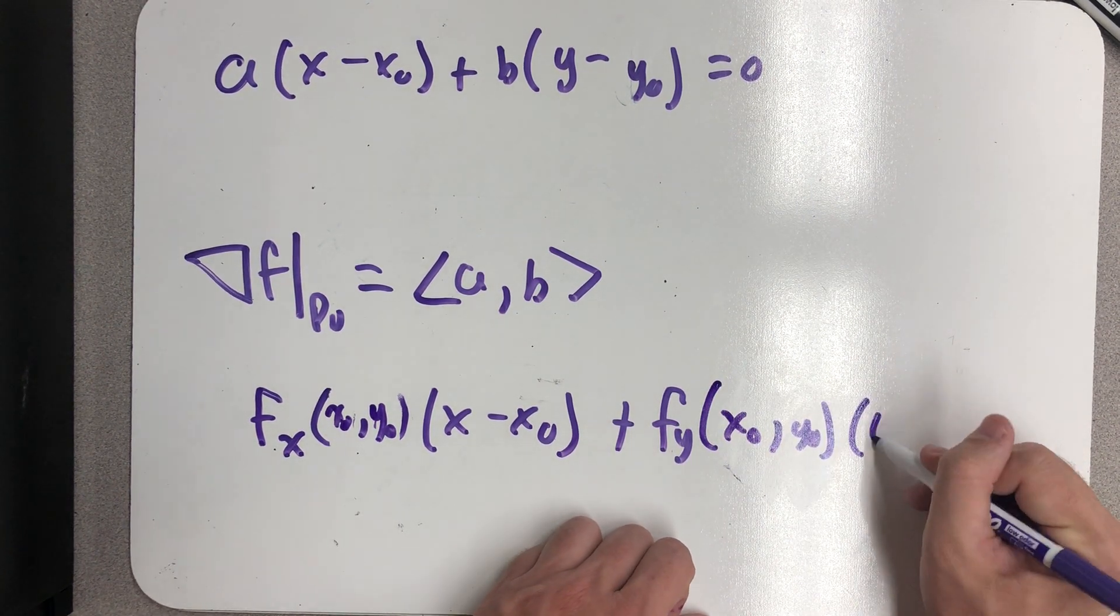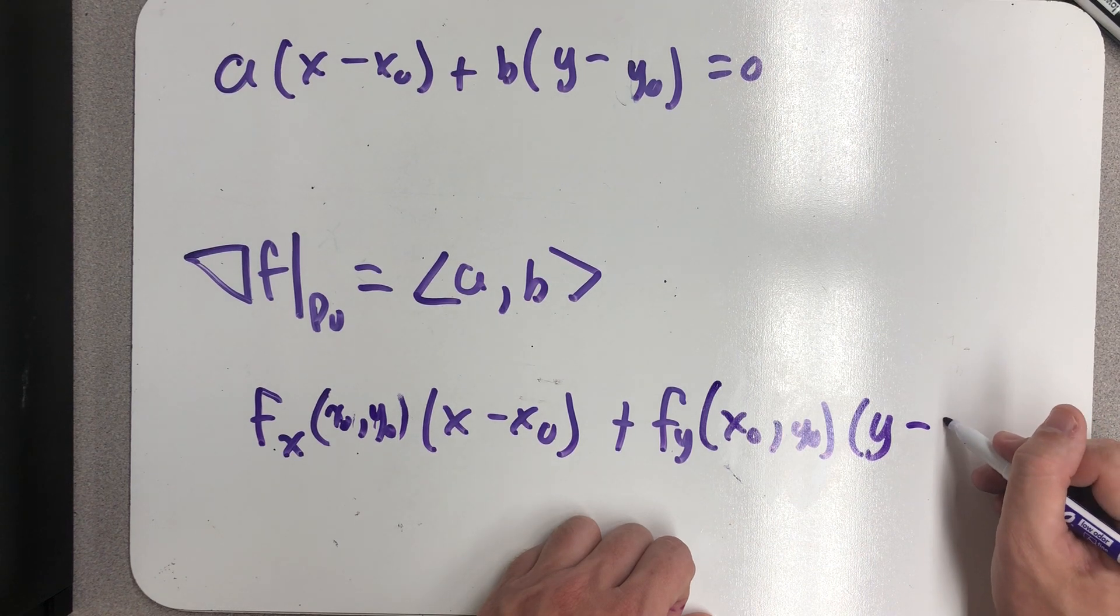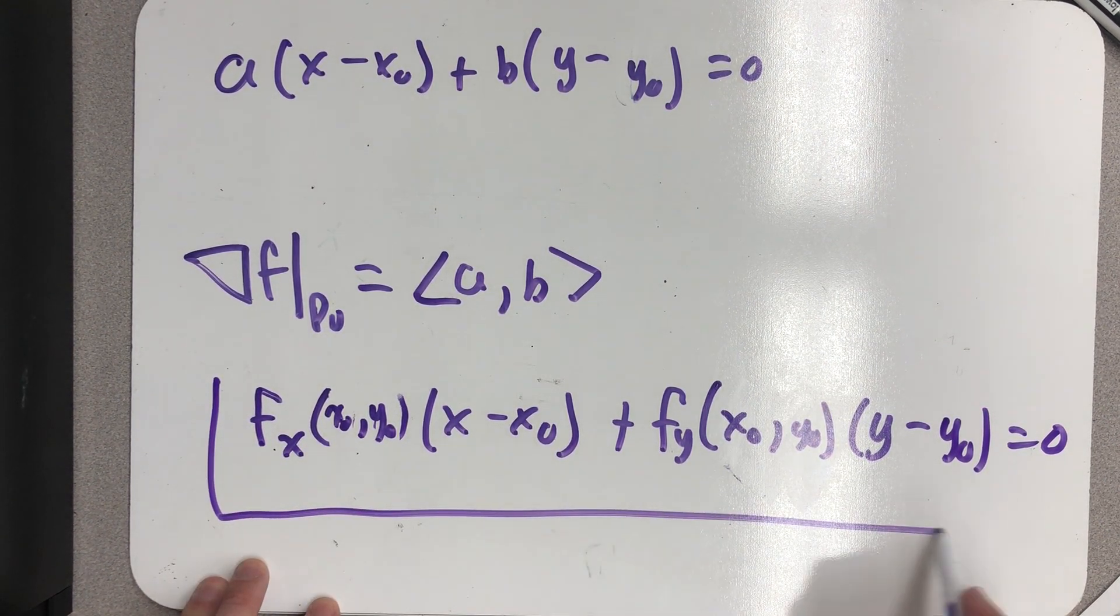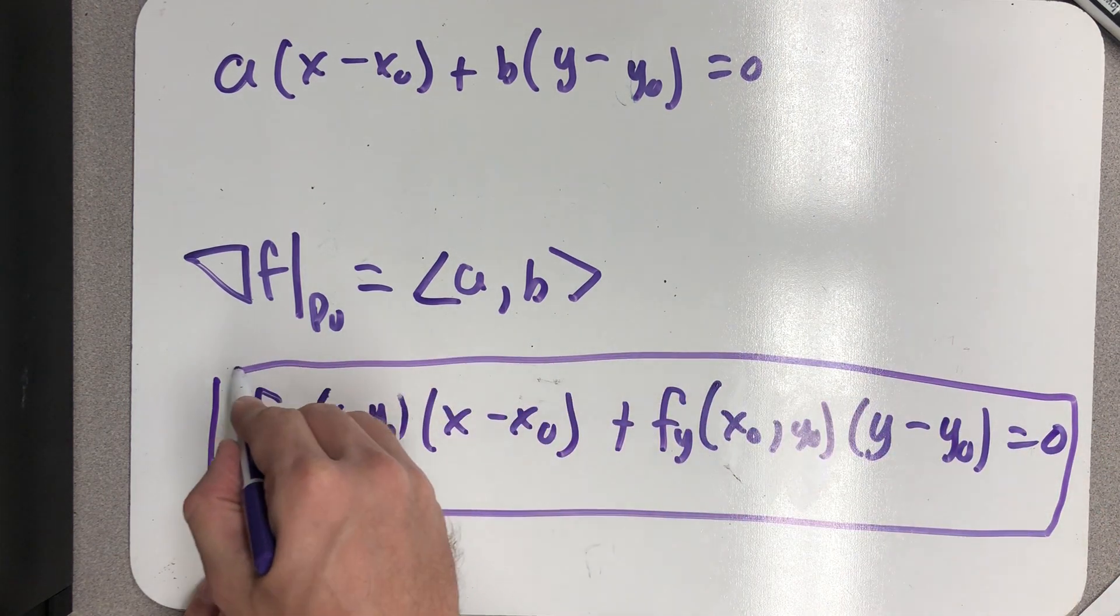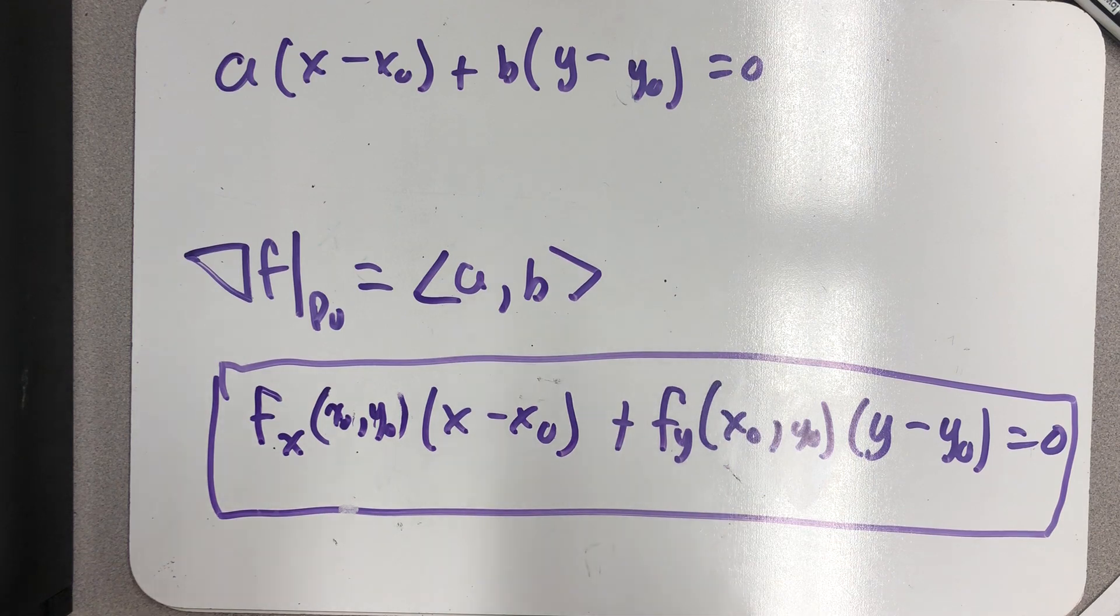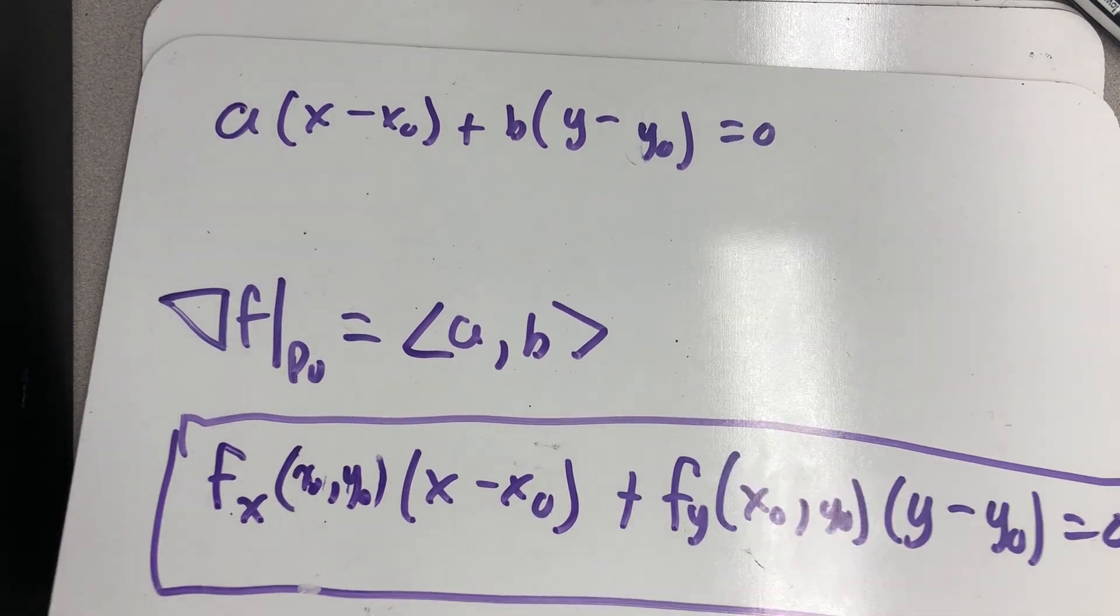That's the kind of thing I should edit out of these videos, but that's okay. Equals zero. If I have the gradient vector, I can write down the equation of my line in this format with no effort. Let's work an example.